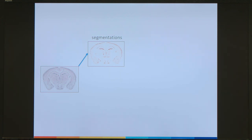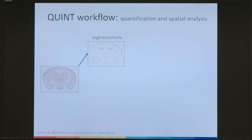This leads us to the question of why you would want to do segmentation in the first place. Here I've taken an image of a brain section from a mouse and pulled out the labelling — in this case Calbindin labelling. Once you have that segmentation, what can you do with it? At the University of Oslo, we've developed a workflow called the Quint Workflow, which allows you to quantify and spatially analyse labelling in the context of reference atlas space.